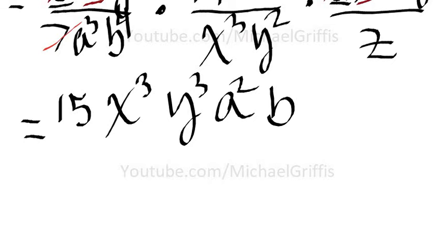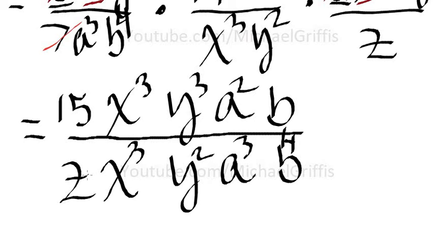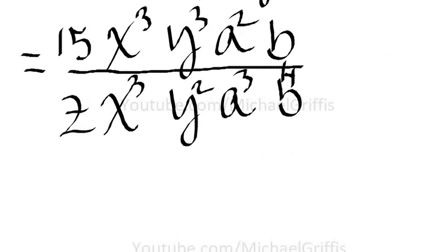Now the denominator. We have an a cubed, let's write it underneath this other a. We have a b to the fourth, we'll write it underneath here. We have an x cubed, a y squared, and a z.